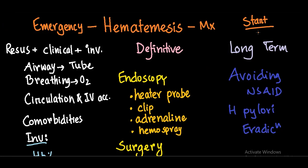What do you do when a patient comes to you with upper GI bleeding, specifically hematemesis? The first principles are: immediate resuscitation, clinical assessment, and some investigations.